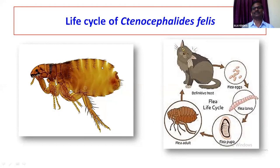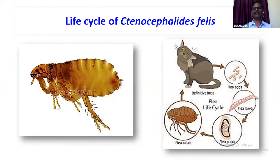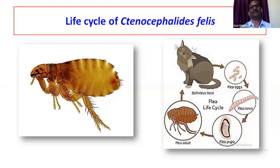For veterinarian friends, there are some important features of fleas. There are comb-like structures present just below the genae or cheek, called the genal comb, and spines present just at the thoracic region, in the pronotal comb. Both combs are present in cat flea and dog flea Ctenocephalides felis. Ctenocephalides canis also infests sheep and goat but not like Ctenocephalides felis. By observing the combs and the shape of the head, they can be differentiated.